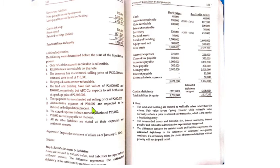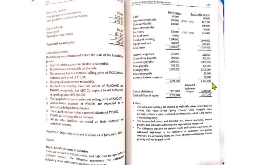After re-stating all values, total assets are 3,527,200 and total liabilities plus estimated expenses are 3,916,000. Liabilities are still larger than assets, resulting in a capital deficiency of 388,800 as the balancing figure. This confirms the problem: assets are insufficient to cover all claims, so we must determine how to distribute assets according to priority.